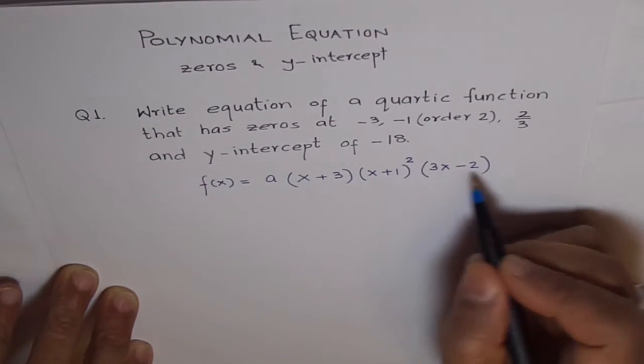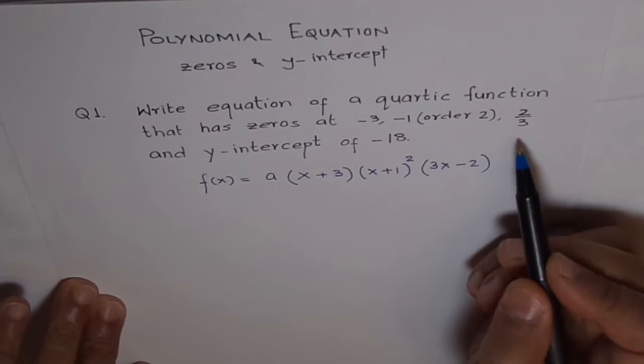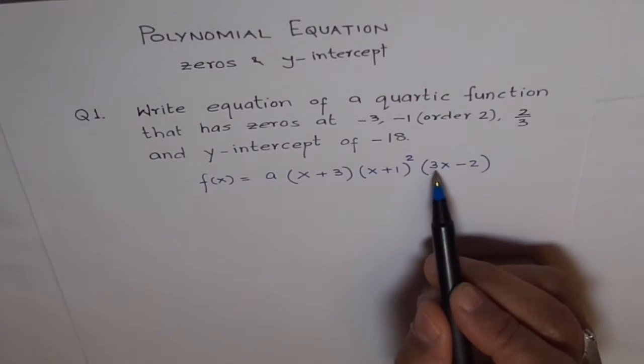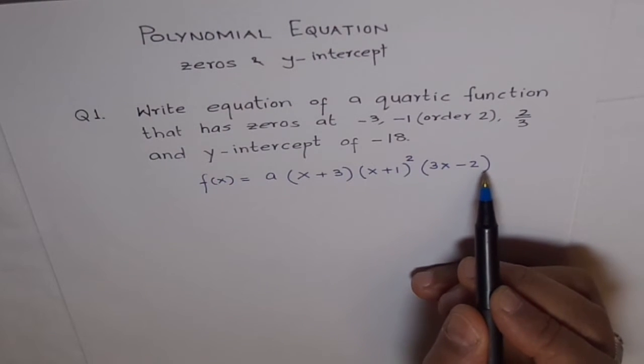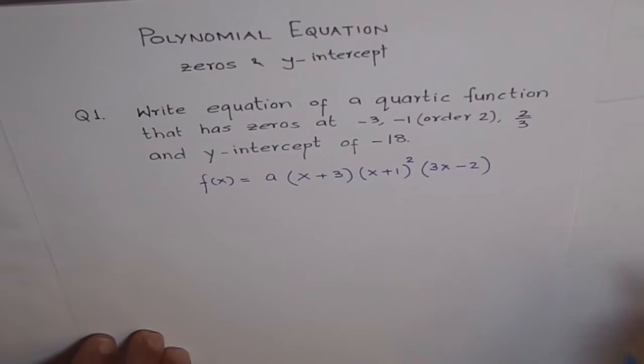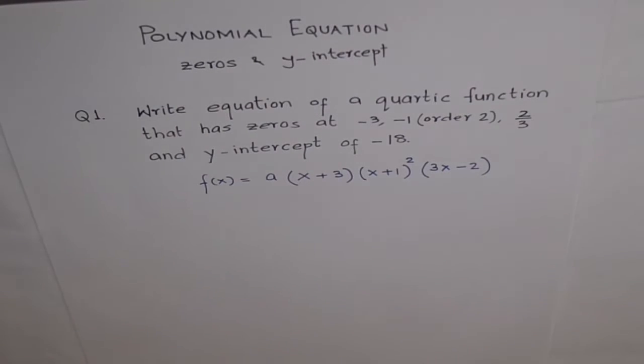Now, see, why 3x minus 2? You want a zero at 2 over 3. Now, if you equate 3x minus 2 equals 0, you get zero at 2 over 3. The other way to look into this fraction is like this.